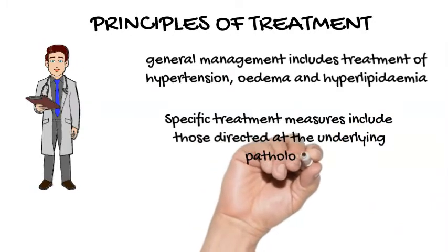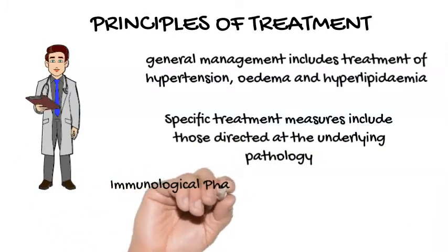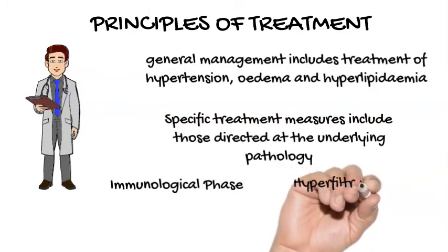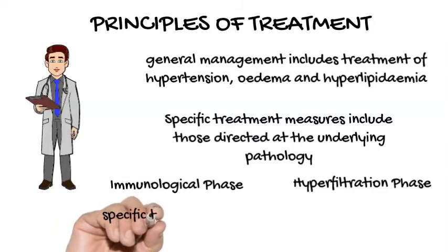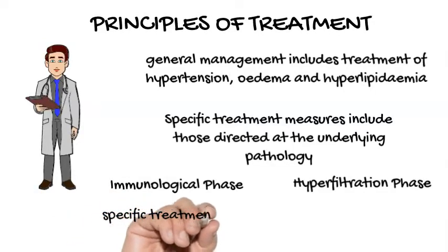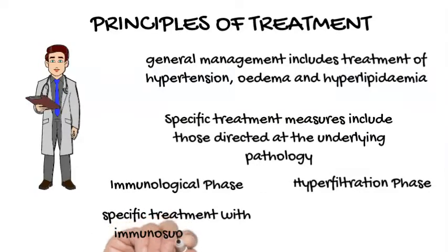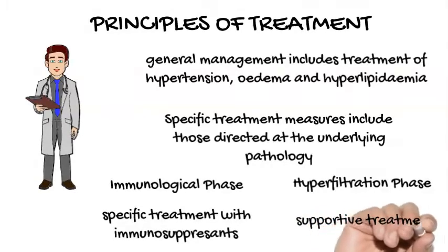Hypofiltration phase. With progression of disease, a chronic or late phase occurs due to injury resulting from glomerular hyperfiltration. Glomerular hyperfiltration is associated with increasing proteinuria, elevated serum creatinine, and hypertension. This phase is mainly supportive and is targeted at controlling hypertension and protein restriction.